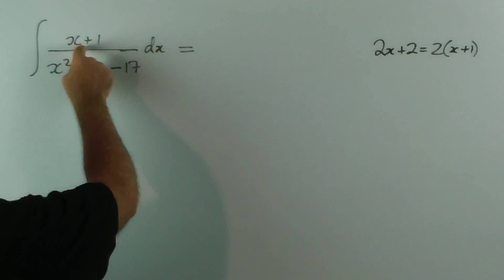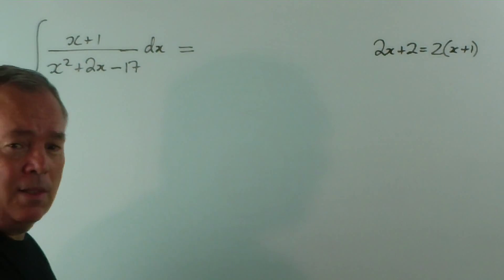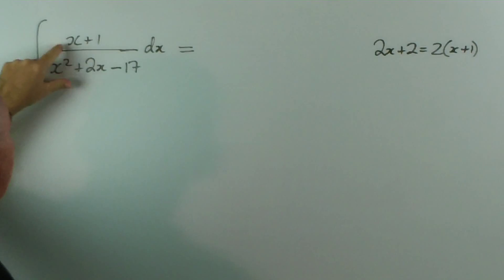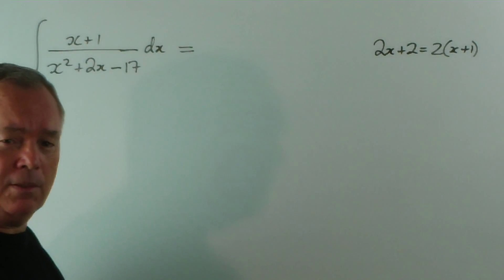And x plus 1 is exactly what we have on the top. So, apart from the constant 2, this is the derivative of that. And that's the exact pattern we need for a logarithm.